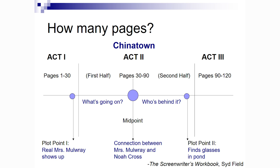This is 120 pages. Chinatown is a drama. If you're looking at a romantic comedy, you're looking at more like 90 pages. A horror script, something more like 90 pages. There are some scripts that are shorter than that.